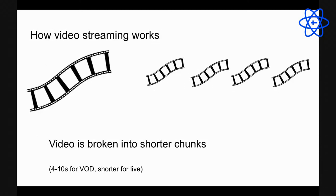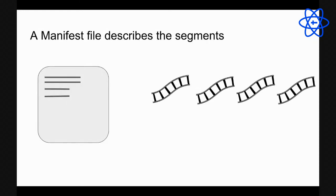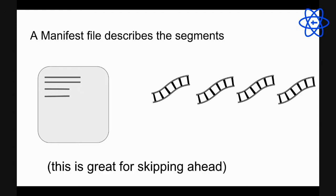Chunking is great for jumping ahead. If you know each segment is 10 seconds long and you jump to 600 seconds in, we can do the math to figure out which segment to download. There's a manifest file — a text file that lists all segments and their timing — so the video player knows exactly which segment to fetch.